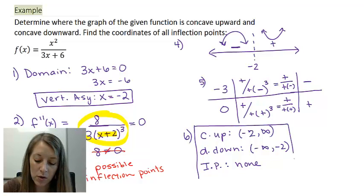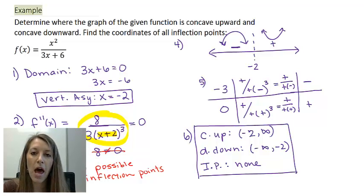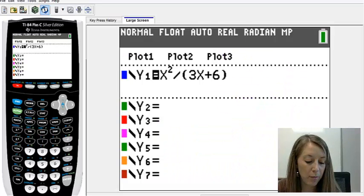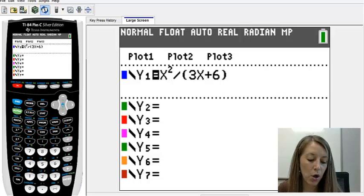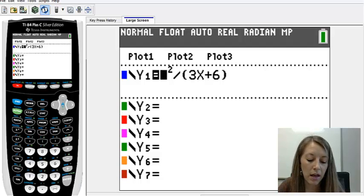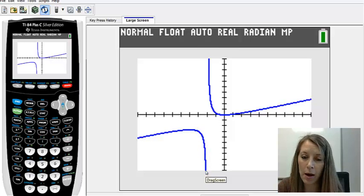The last thing we need to do is confirm this with our graphing calculator. Pulling this up, I have my original function typed into y equals. If I graph this on my standard window, we see this here. We see there's a vertical asymptote at negative two, and it's concave down on the left like a frown or an angry eyebrow.